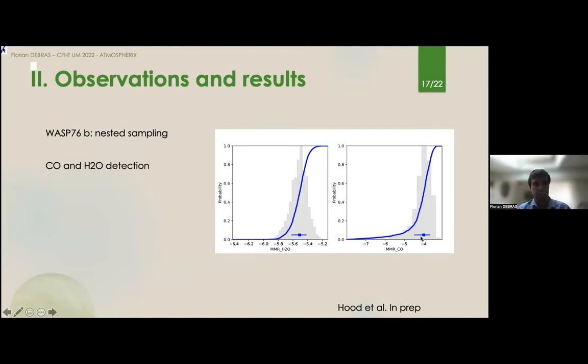What is really interesting, and it confirms the fact that SPIRou is really the best instrument in the world, is that there are some other publications of infrared instruments looking at this planet, and they never detected carbon monoxide or water with such precision. They always had some issues in the detection of water, which was not at a good position, etc., whereas we had a really clean detection of these two species on the first try with SPIRou.